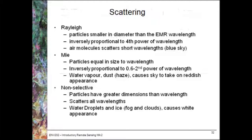Non-selective scattering will happen for all wavelengths of light and is caused by water droplets, ice, fog, cloud, etc. in the atmosphere. This causes a white appearance. A key thing here is that all scattering produces what we call additive path radiance, in that it adds some form of radiance going back up to the sensor.